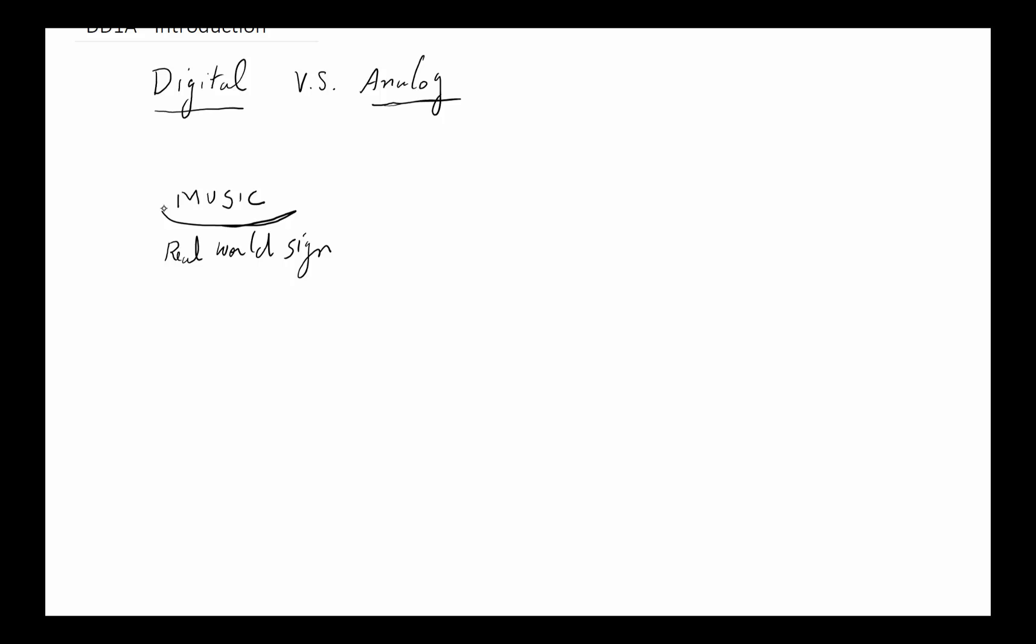Now how is music created? Well, music is typically created by a human or a musical instrument changing the pressure in the air, which in turn will hit an analog device, such as a microphone in this case. And that microphone will take that air pressure and change it to a voltage changing over time.